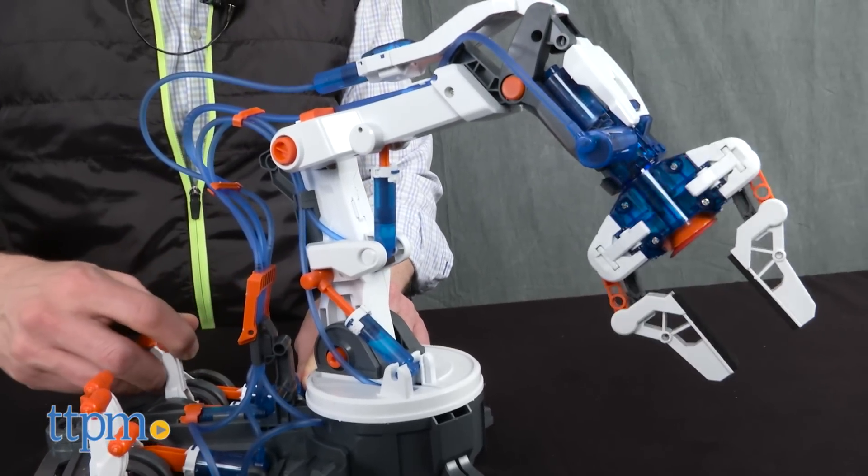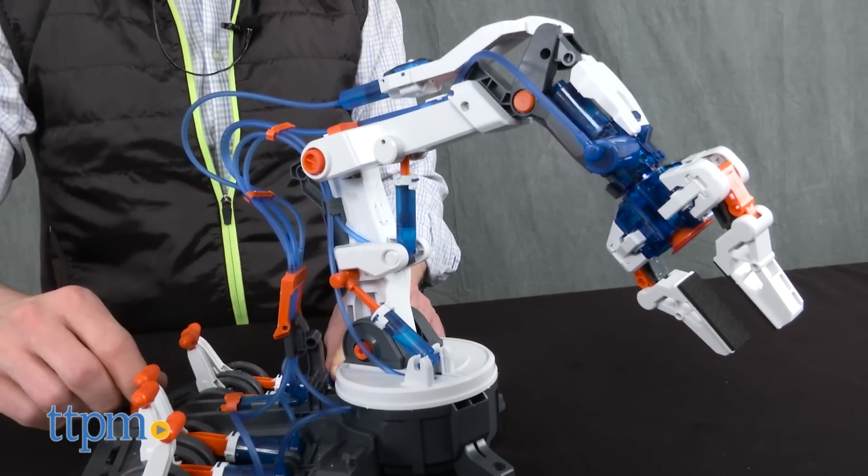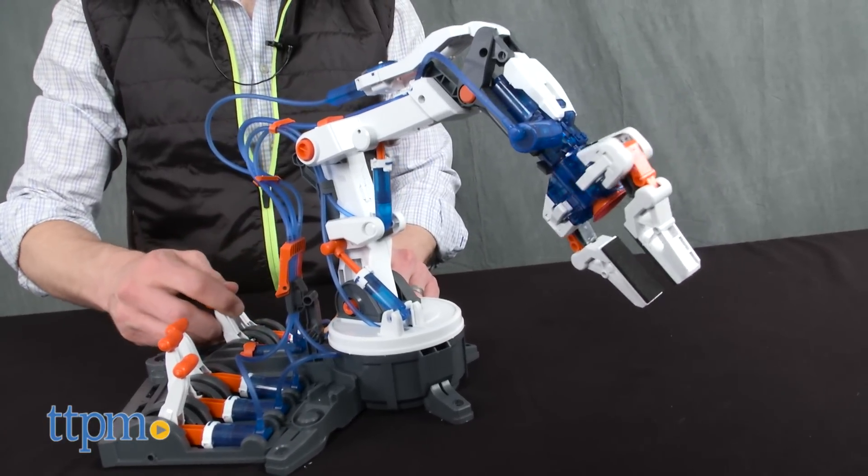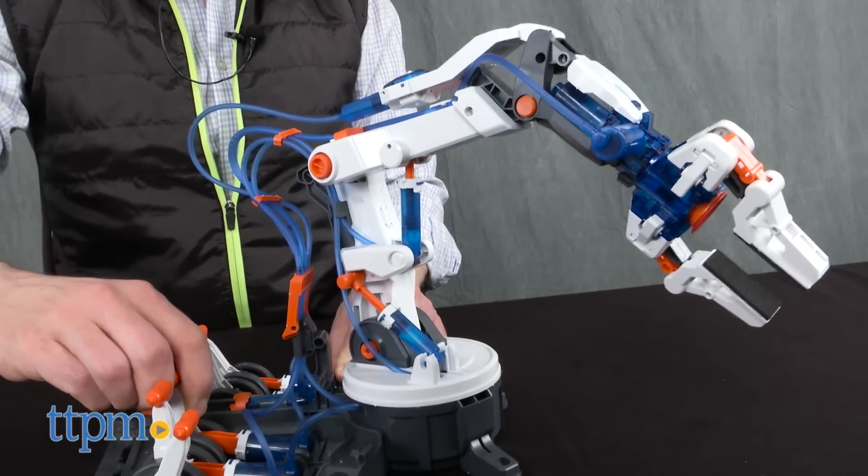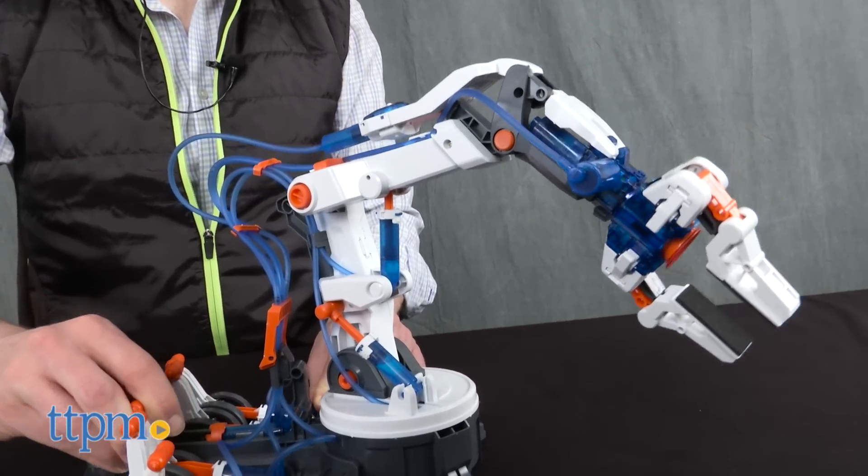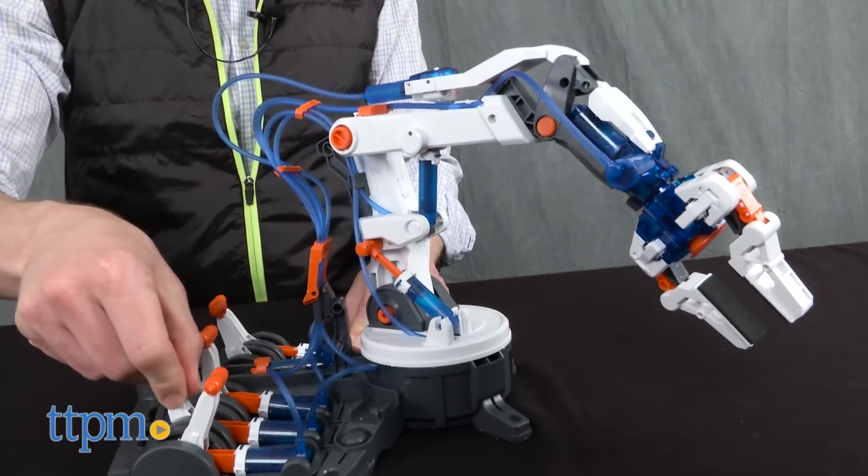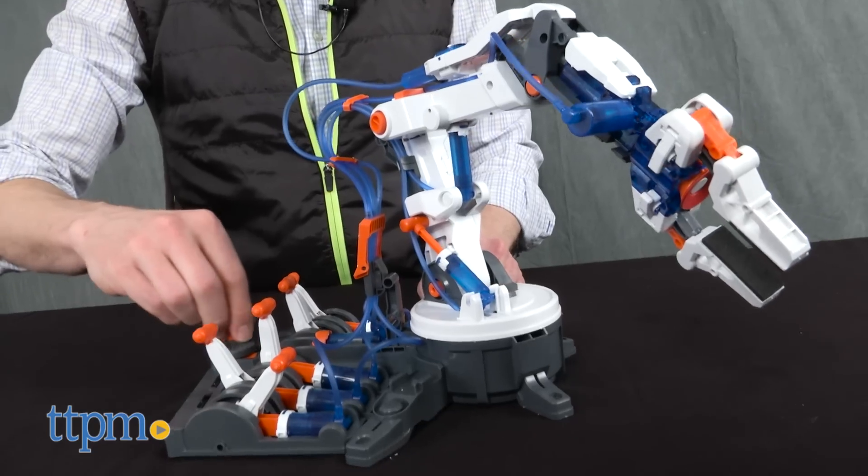Once constructed, junior engineers can control the robot arm in six ways. Operate the gripper, rotate it, extend the arm along any of three axes, revolve the whole arm.